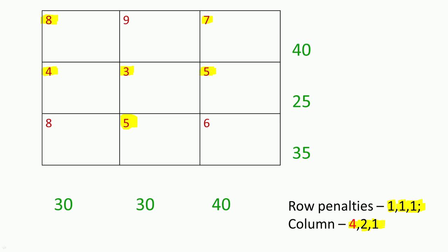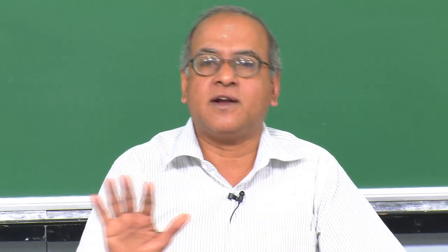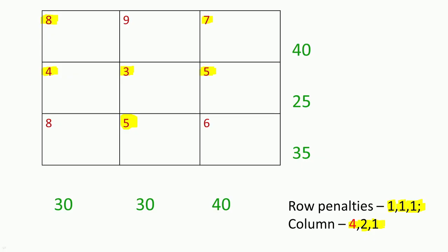If a row or column has the minimum cost coming in two positions, the penalty is 0. Now we have computed the six penalties. We look at them and understand: if I take the first row and am not able to allocate in the least cost position, my penalty is 1. But for the first column, if I am not able to allocate in the least cost position, my penalty is 4. Therefore, this higher penalty of 4 makes me look at the first column first. We choose the row or column that has the largest penalty, because we want to avoid that large penalty by allocating in the least cost position of that chosen row or column.